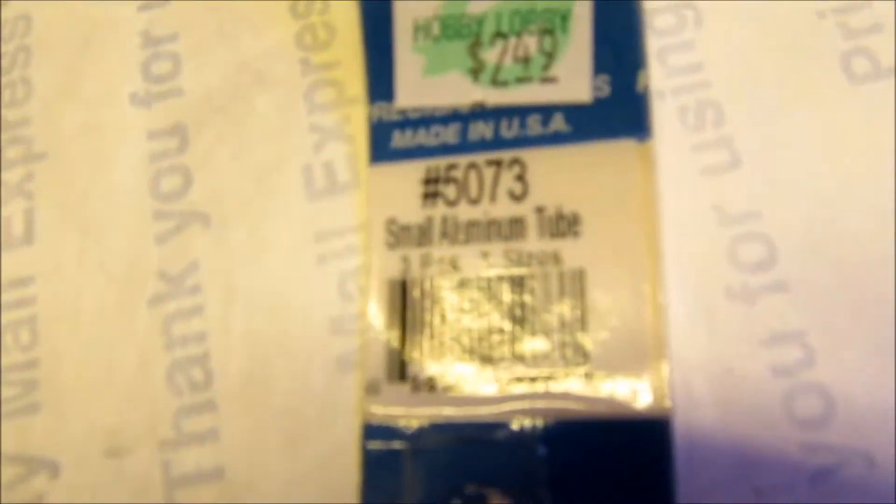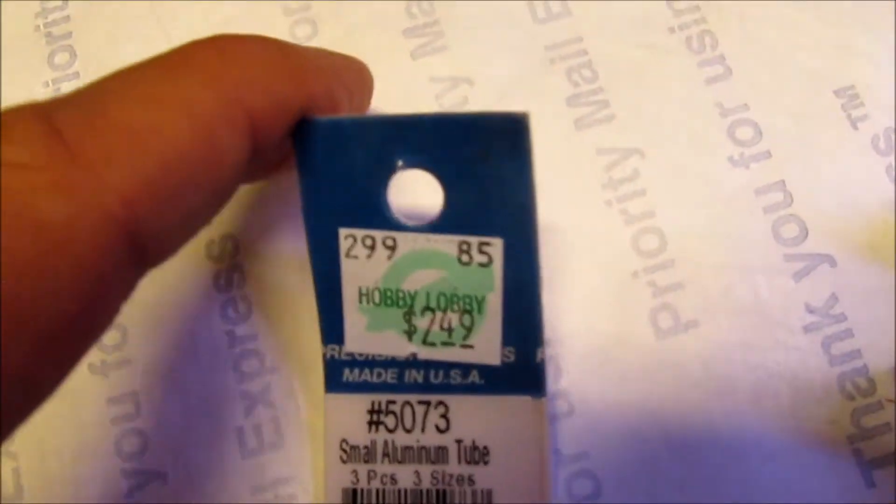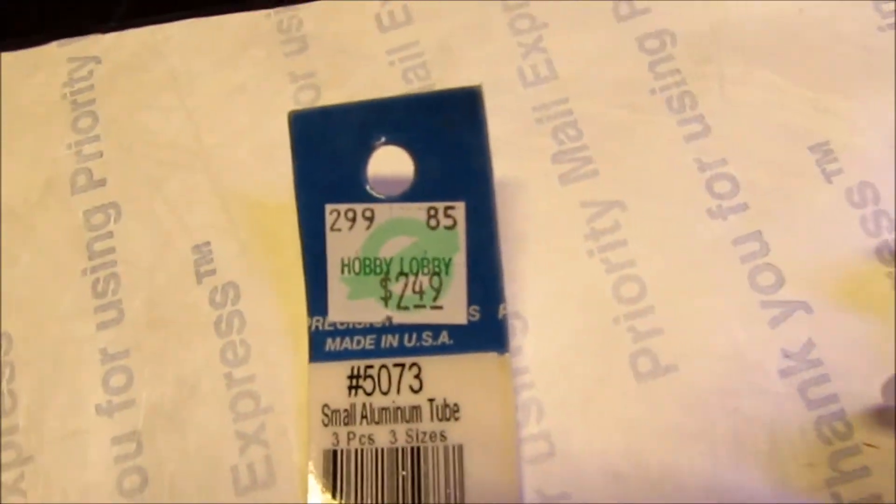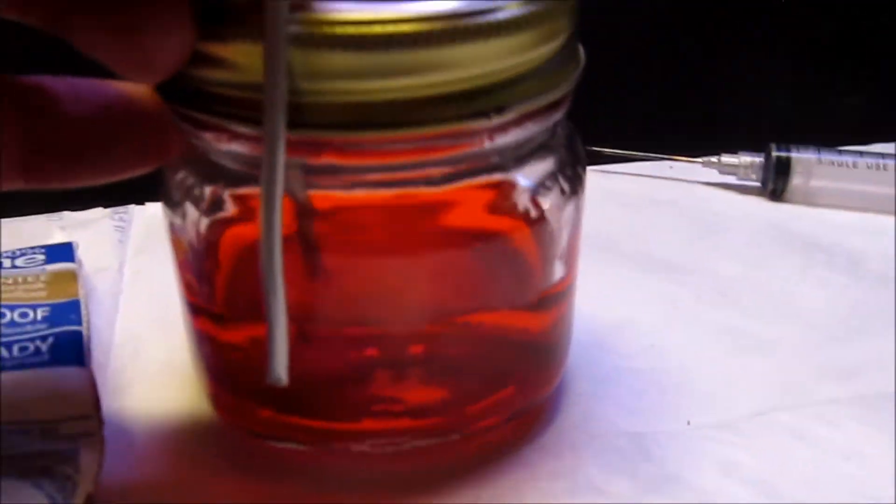Then we're going to need a little bit of soft aluminum tube—number 5073 from Hobby Lobby. They also have a 40% off coupon on their app every week. The soft tubing is what's actually going to go through the jar here and extend our reach all the way down to the bottom.